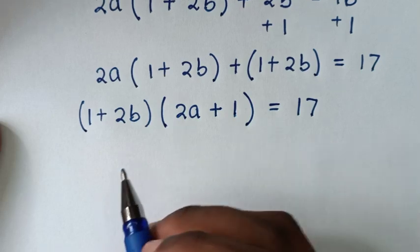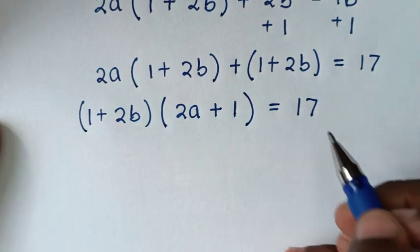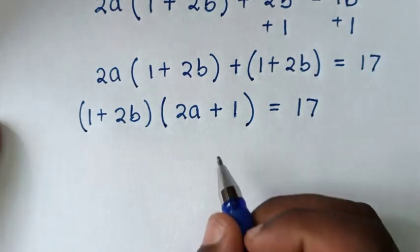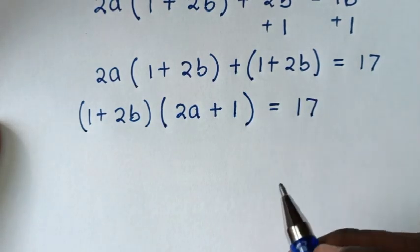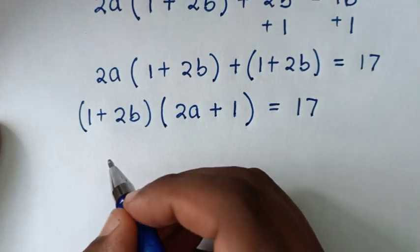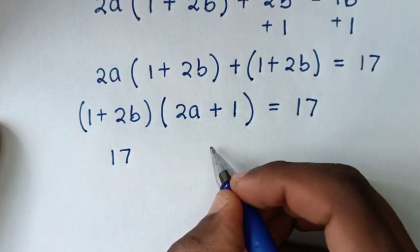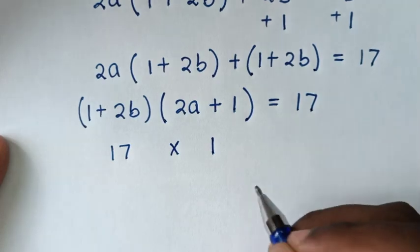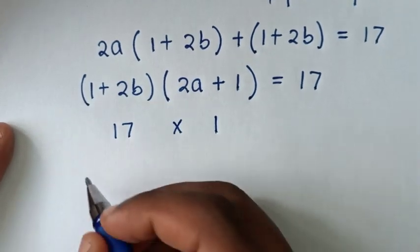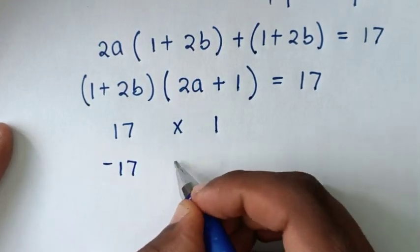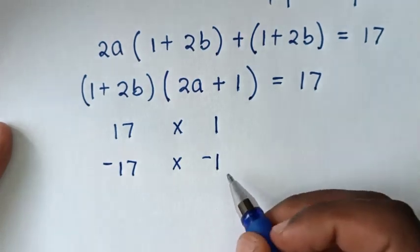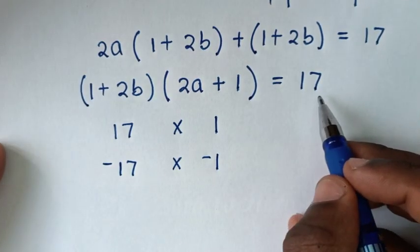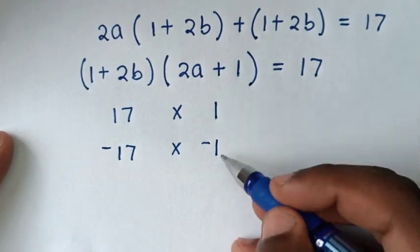To get 17 as a product of two factors: since 17 is a prime number, when it is positive integer it is the product of 17 times 1, and when it is negative integer it will be negative 17 times negative 1, which also gives positive 17. So we have two possibilities.